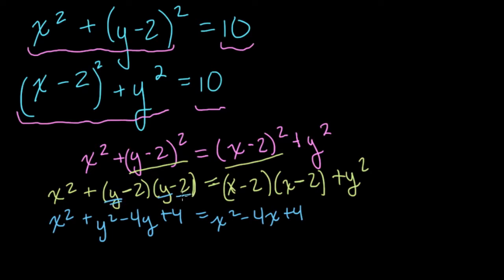Y times -2 is -2y, but then we have another -2y which is -4y. And then -2 times -2 is positive 4. The same thing happens here but with x. And then this is plus y squared.